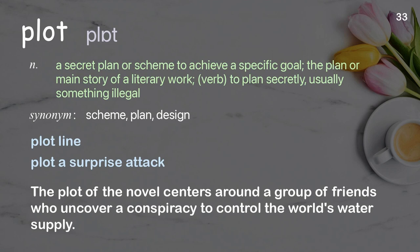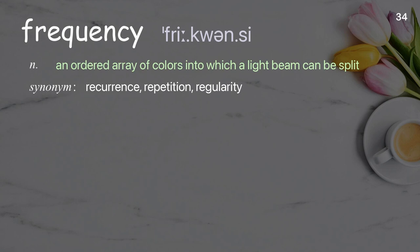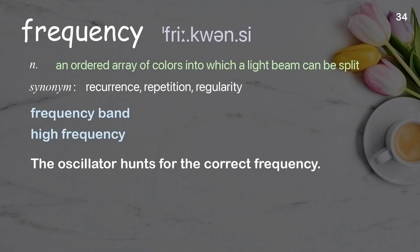Frequency: an ordered array of colors into which a light beam can be split. Examples: frequency band; high frequency; the oscillator hunts for the correct frequency.